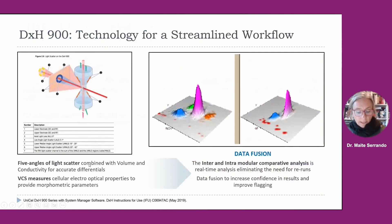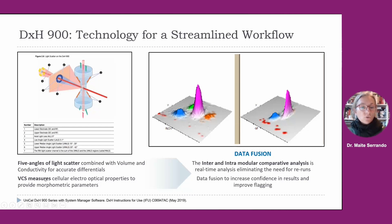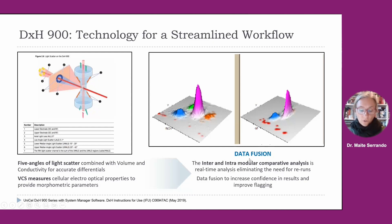The DXH 900 technology allows measurement of cells under five angles of light scatter, combining volume and conductivity to obtain accurate differentials. These BCS measurements are from electro-optical properties of cells and provide morphometric parameters summarized in a table we will see in the next slides. It is very important to talk about data fusion, which combines intra-modular comparative analysis. It is a real-time analysis that eliminates the need for reruns and increases confidence in results, improving FLAG efficiency in all cases.